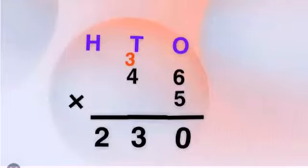Then we multiply 4 tens by 5, which equals 20 tens. Add the carry: 20 plus 3 equals 23. Always remember, the product of a 2-digit and 1-digit number can be a 3-digit number.